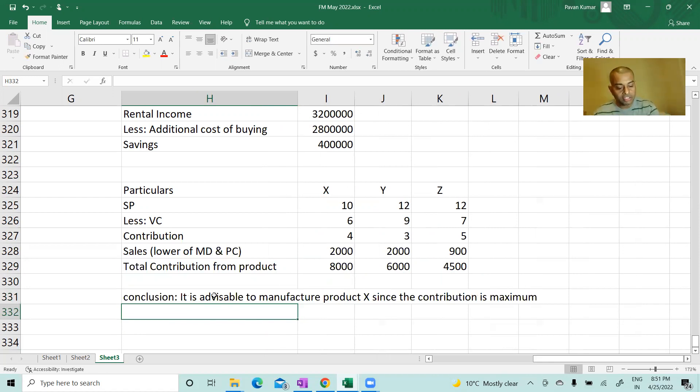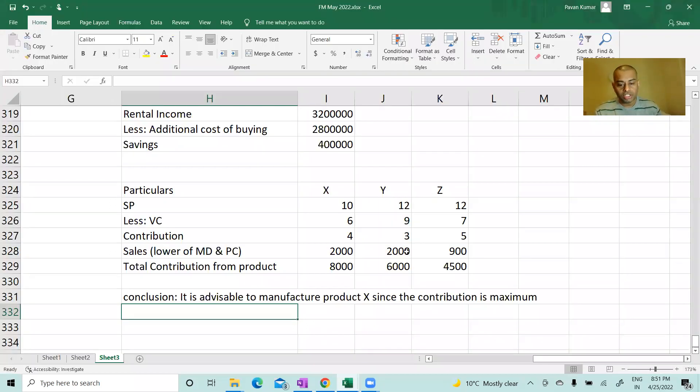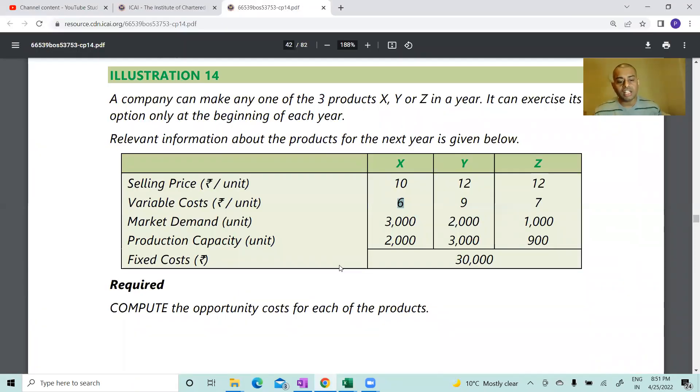Now wait, I have a general knowledge - what the hell is this? The company can make three products for the next year. Fixed cost 30,000. Which company is this or who great person wrote this question? Your contribution is 8000, fixed cost is 30,000. Are you kidding me?